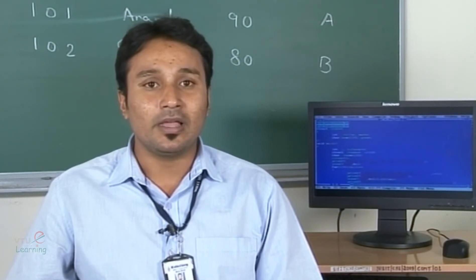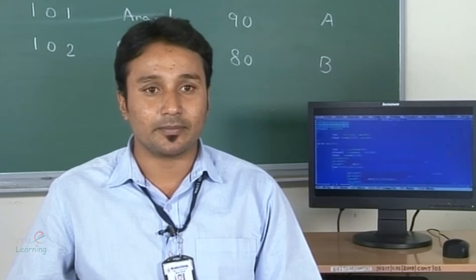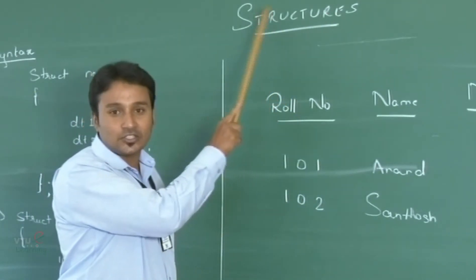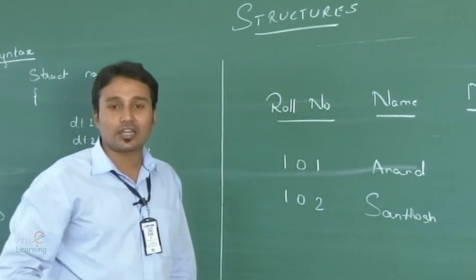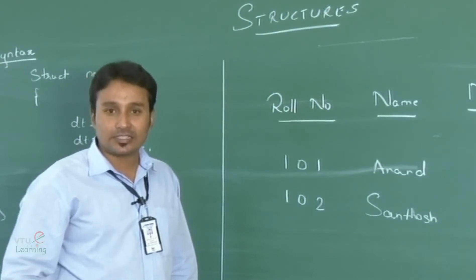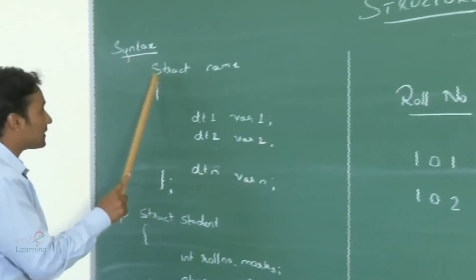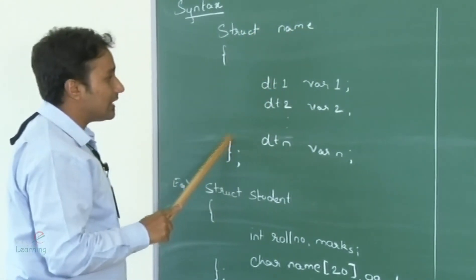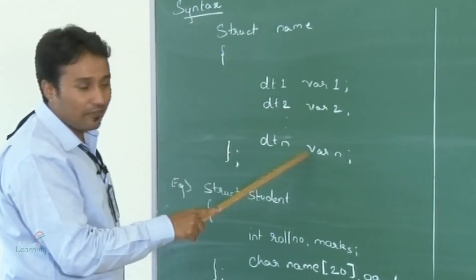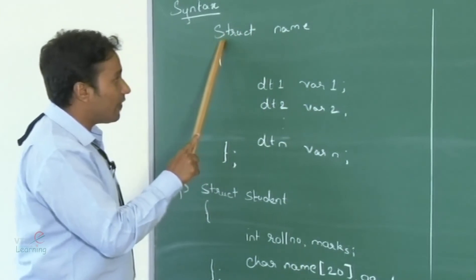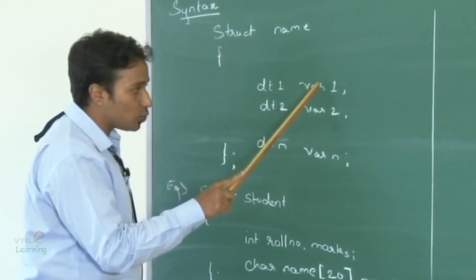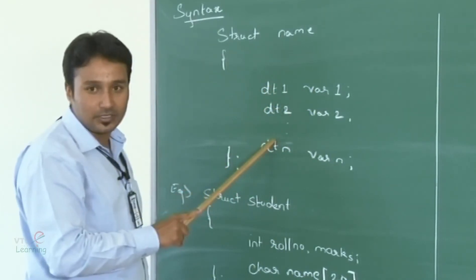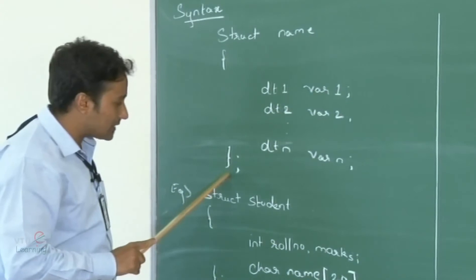Now before going into the program, let us understand the logic. Structures are the collection of dissimilar data types. The syntax is: struct name, where struct is a keyword followed by the name of the structure, along with the declaration of corresponding variables inside curly brackets — variable 1, variable 2, up to variable n with their respective data types — closed with a semicolon.